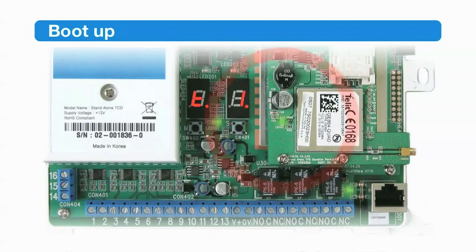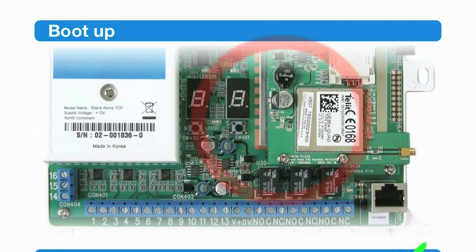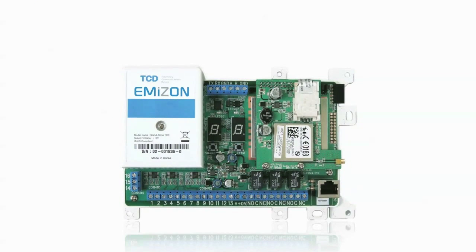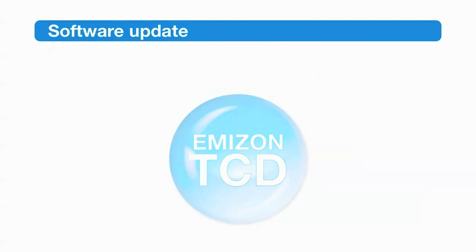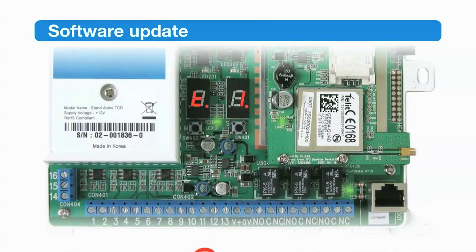Note: the interval between flashes on the GPRS LED slows down from once a second to once every 3 seconds once it's registered with the GPRS network. A key feature of the TCD is the facility to download the latest version of software. With the display showing TI, press the mode and set buttons together and hold until UF is displayed. Release and then wait until UC is displayed, indicating that the update is complete. If RR instead of UC is displayed, repower the TCD and repeat the boot up and software update process until UC is shown.